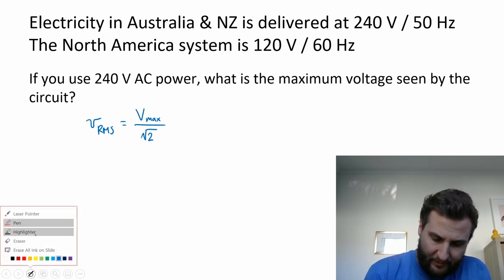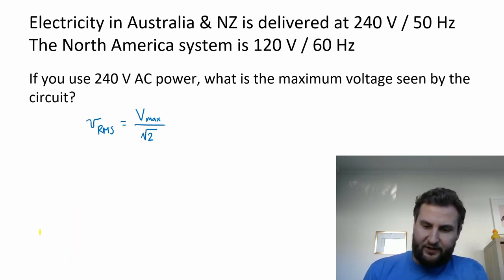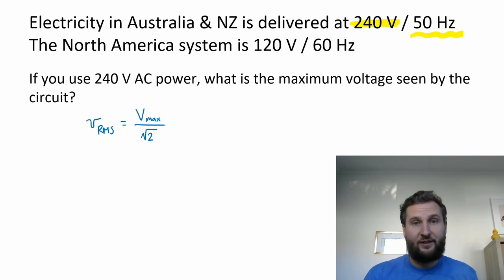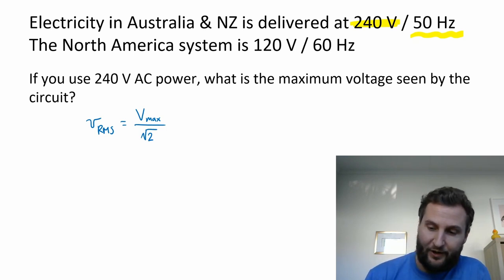So now in the problem here, electricity in ANZ is delivered at 240V and 50Hz. So that means that the mains are at 240 volts that you plug all your appliances into, and they operate at 50 hertz. Now if you go traveling to North America and you bring something and you plug it in there, what you're going to be delivered is 120 volts. So different systems.